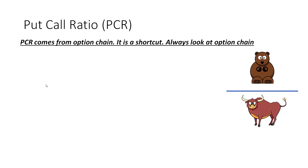Now let's cover PCR — put-call ratio. Important warning: do not use PCR as a golden bullet. Don't just look at PCR and trade. PCR is derived from option chain data, so if you have the raw option chain, you should look at that first. PCR is a good shorthand, but always look at option chain first and then confirm with PCR — not the other way around.